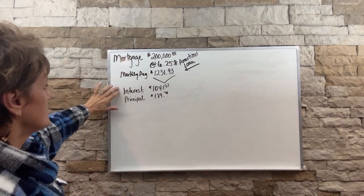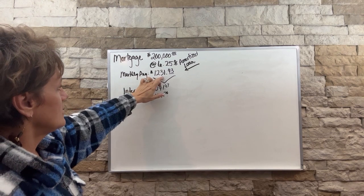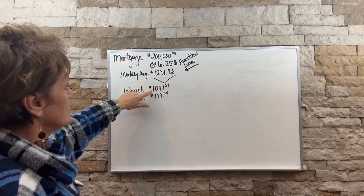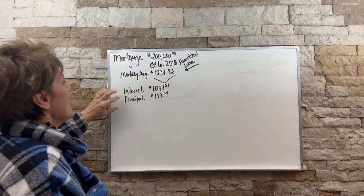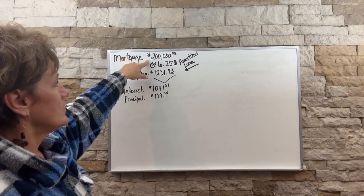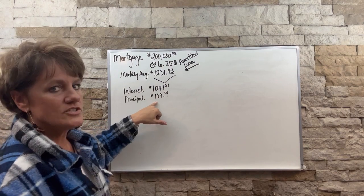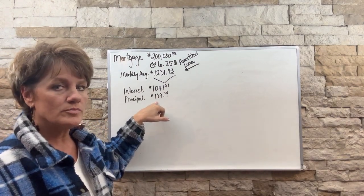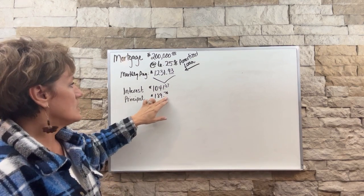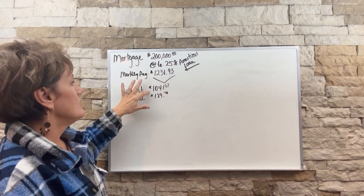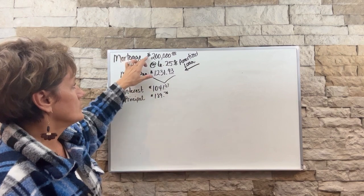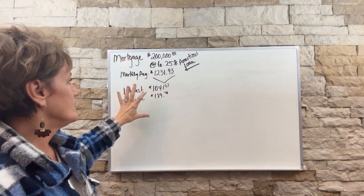So interest, this part of the payment pays your interest at $1,041.67. The principal amount is under $200. It goes towards the $200,000 loan. This right here is what causes mortgages to take forever to pay off. You're talking 30 years and this is why is because almost all of the payment goes to interest, not to the principal. Only this small amount. This is your very first payment.